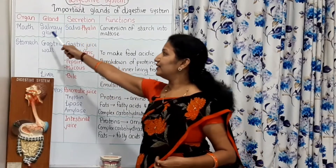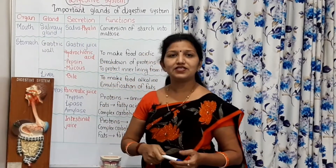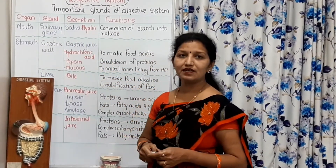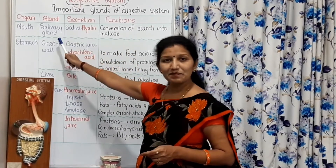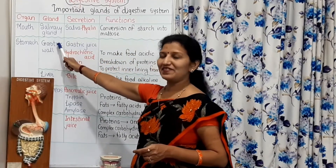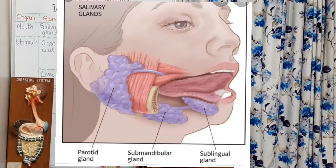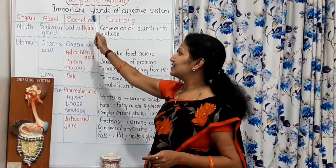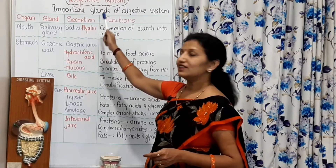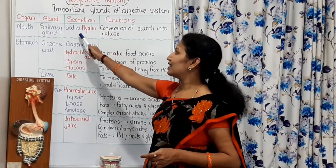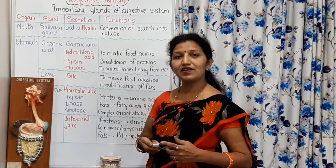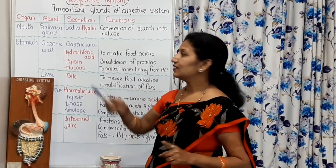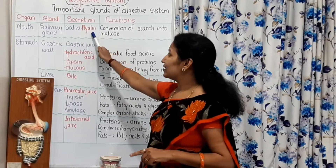We have studied that the process of digestion begins in the mouth. In the mouth, which glands are present? Yes, salivary glands. These salivary glands secrete saliva, and this saliva contains ptyalin, which is an enzyme.